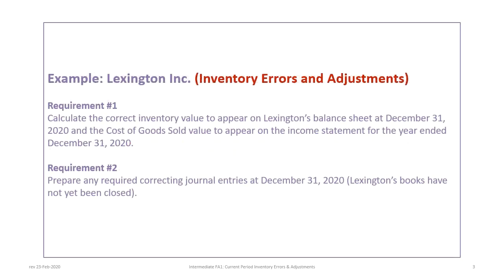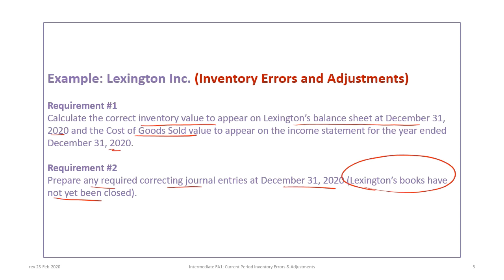This tutorial is based on the Lexington Inc. example, so please make sure that you download the correct file and follow along. There are two requirements: first, to calculate the correct inventory value on Lexington's balance sheet at December 31st and the associated cost of goods sold; second, to record any correcting journal entries at December 31st. The assumption is that Lexington's books have not yet been closed.